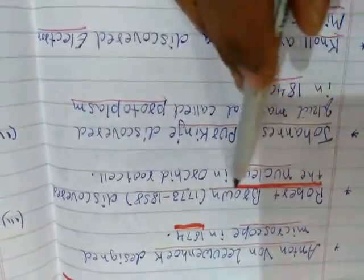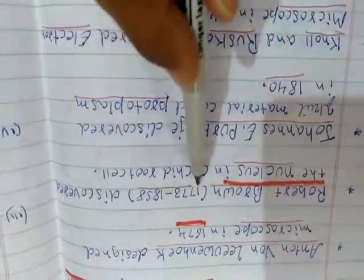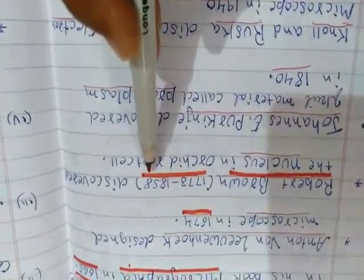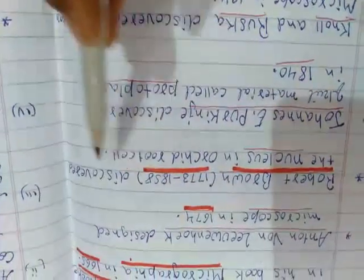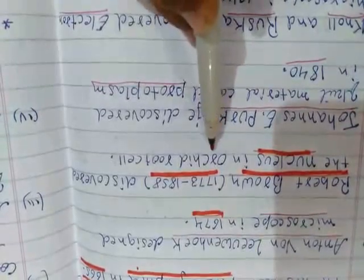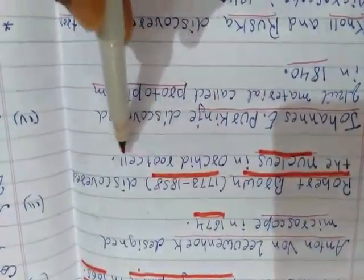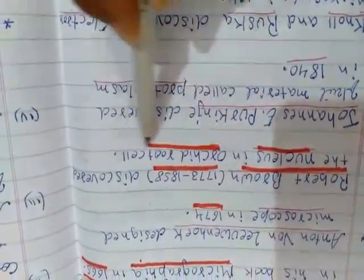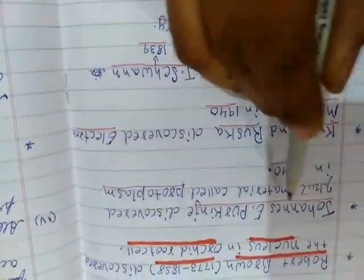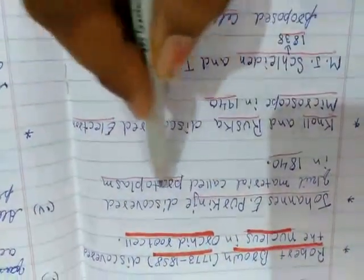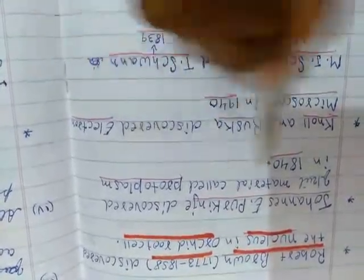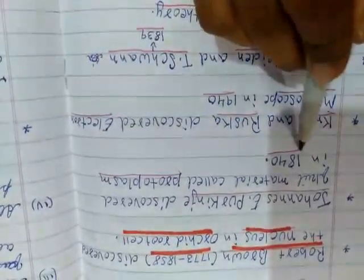Robert Brown, in 1773–1858, discovered the nucleus in orchid root cells. Jones E. Purkinje discovered the fluid material called protoplasm in 1840.